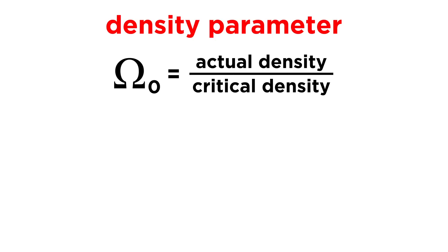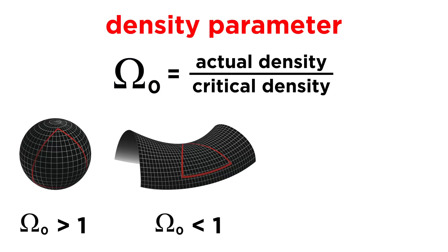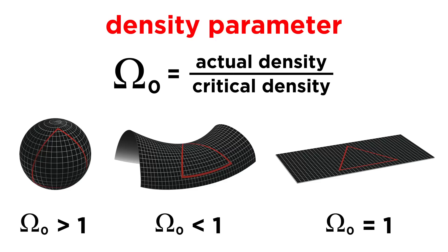This curvature is described by the density parameter, or the ratio of actual density to critical density, which is represented by the Greek letter omega. If omega is greater than or less than one, we get positive or negative curvature, respectively. If omega equals one, the universe is flat.